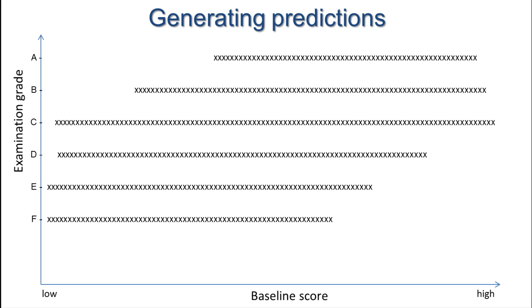We will get something like this. Here, we have around 500 results. Each cross represents an individual student, for whom we have both a baseline score and a final examination grade. From these data, we can generate a line of best fit, which is what we call a trend line or regression line.